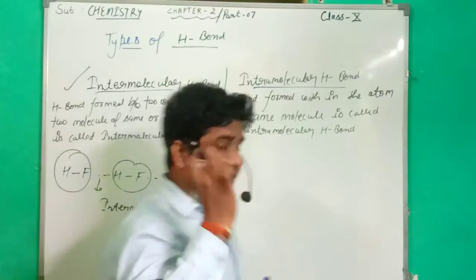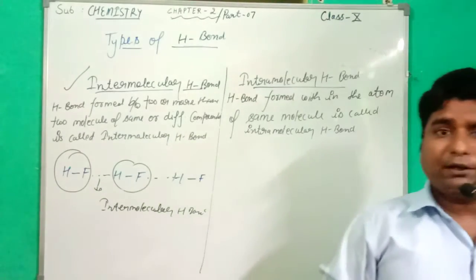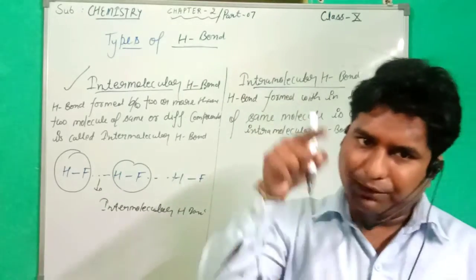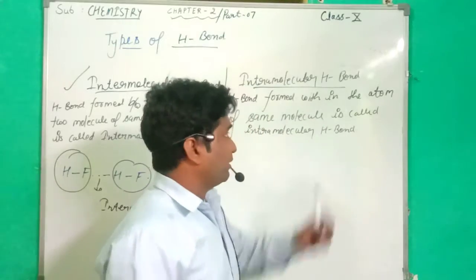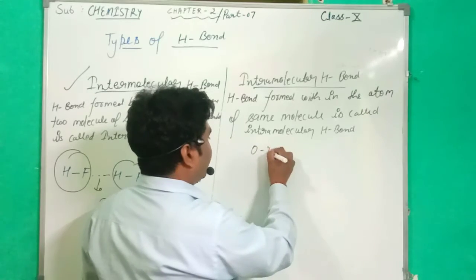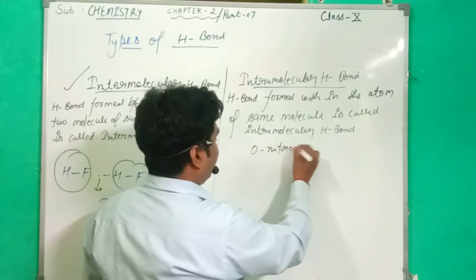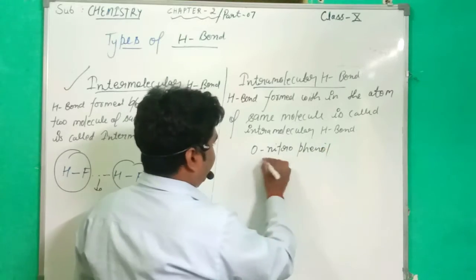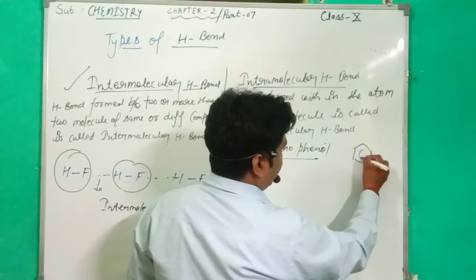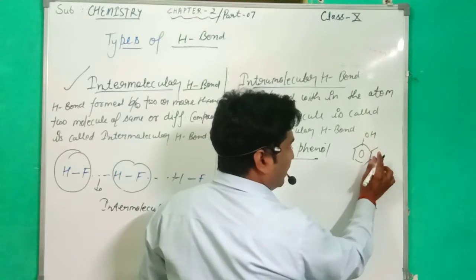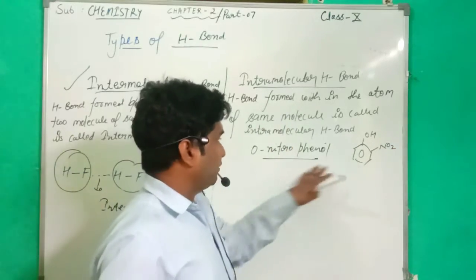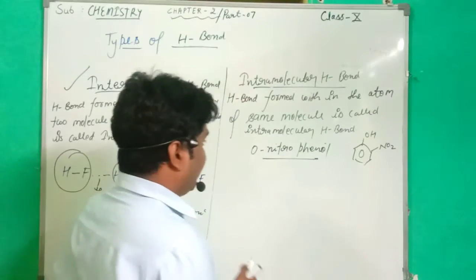Now what is the Intramolecular Hydrogen Bond? The Intramolecular Hydrogen Bond is formed within a single molecule. As an example, take ortho-nitro-phenol. In ortho-nitro-phenol, an intramolecular hydrogen bond is represented.